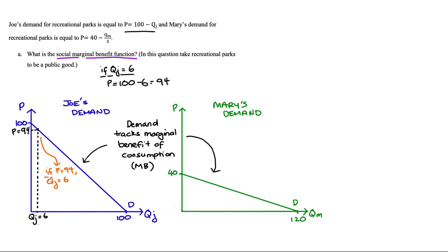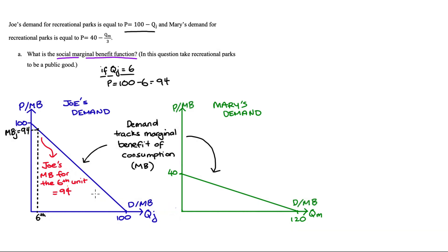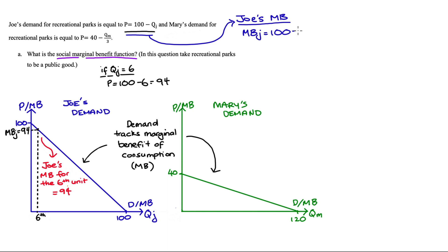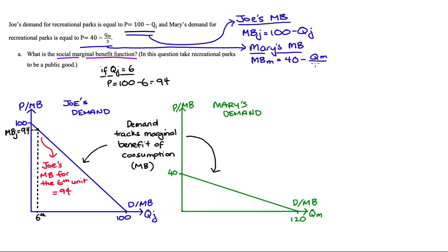The standard interpretation is that if the price was 94, Joe will demand six units. The marginal benefit interpretation is that Joe's marginal benefit of consumption for the sixth recreational park is equal to 94. So when working with questions about marginal benefit, our vertical axis — the height of our demand curve — can also be thought of as marginal benefit. Algebraically, we can replace the price variable with a marginal benefit variable. So for Joe: MB_Joe = 100 - QJ. We can do the same for Mary: MB_M = 40 - QM/3.